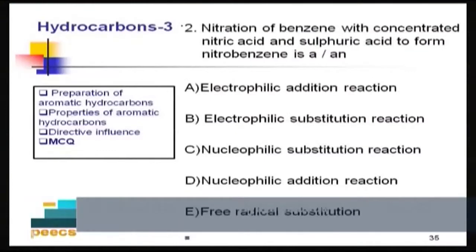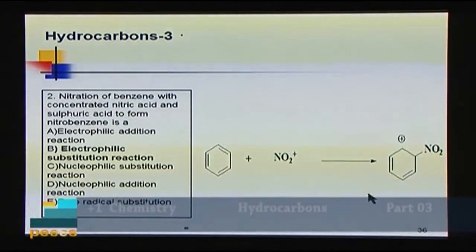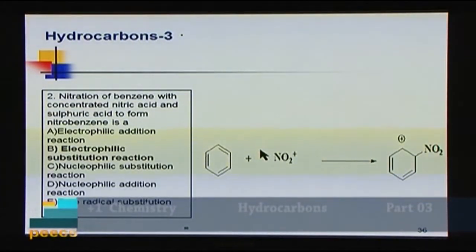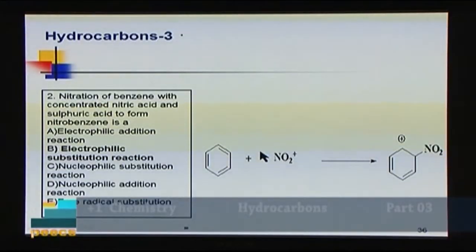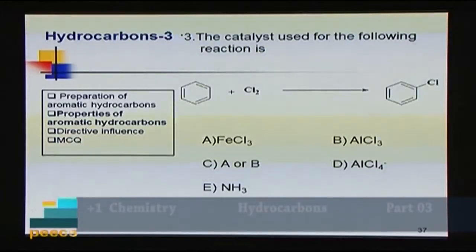Question 2: Nitration of benzene with concentrated nitric acid and sulfuric acid to form nitrobenzene is: A) electrophilic addition, B) electrophilic substitution, C) nucleophilic substitution, D) nucleophilic addition, E) free radical substitution. Nitration involves replacement of hydrogen with NO₂⁺ (an electrophile), with no addition to the pi bonds. So nitration is an electrophilic substitution reaction. Answer: B.